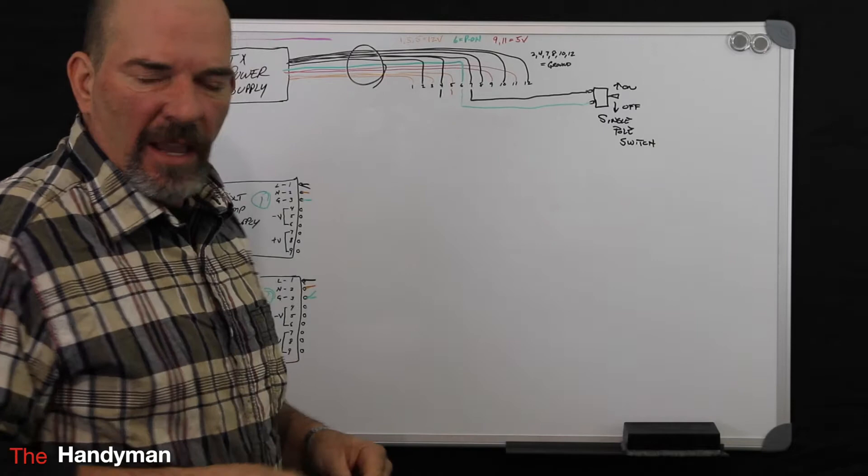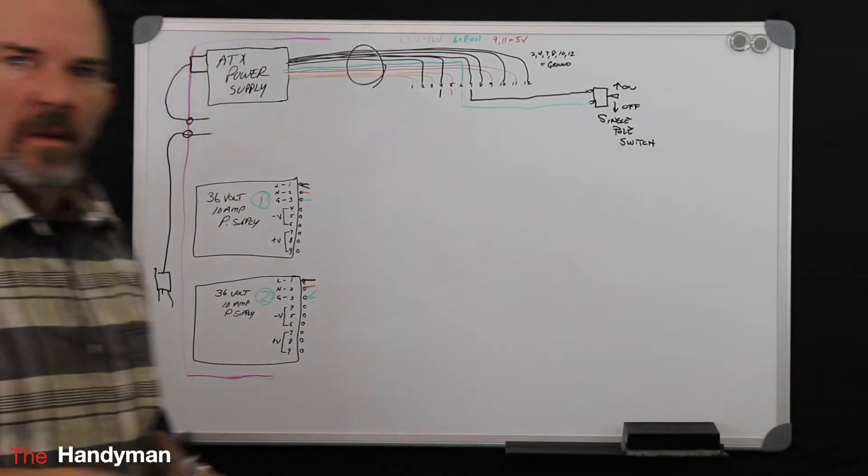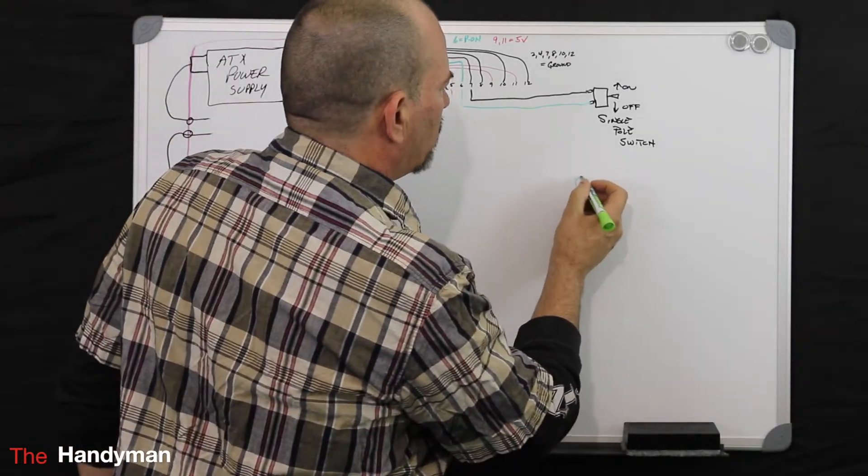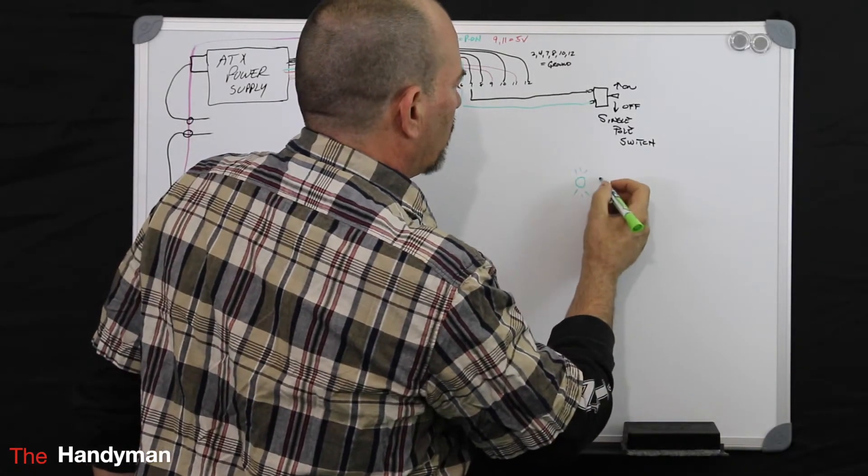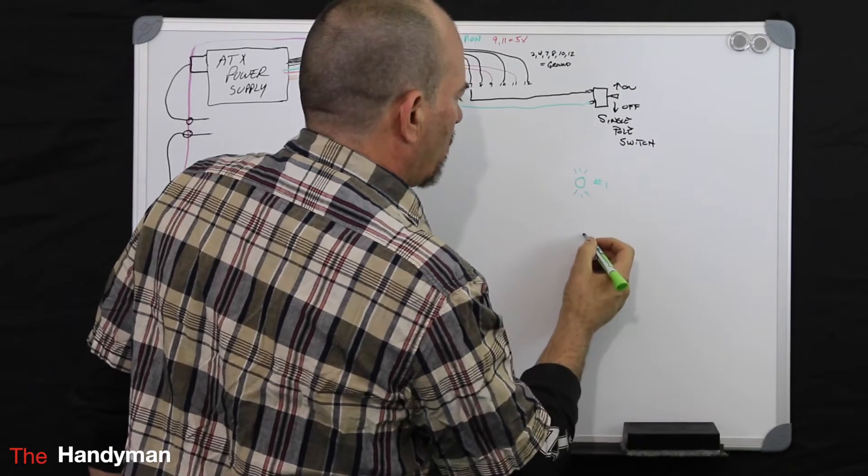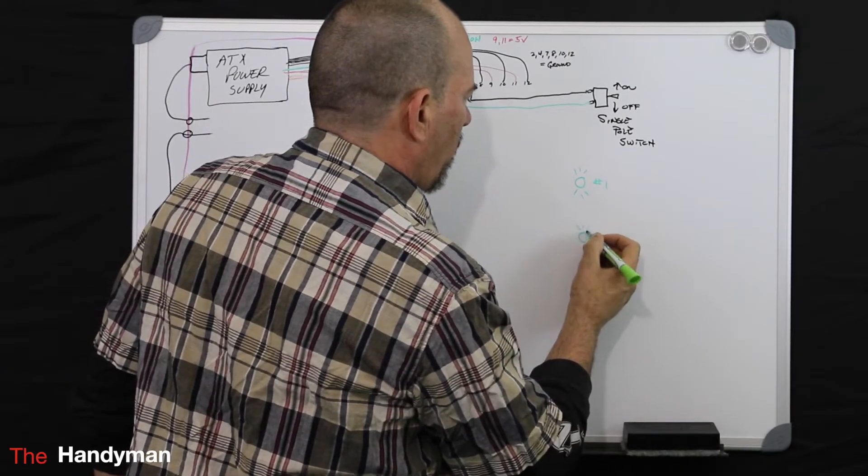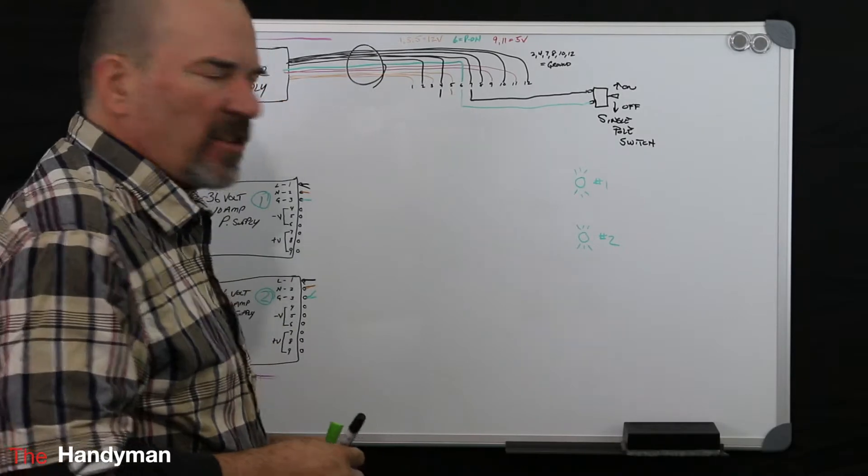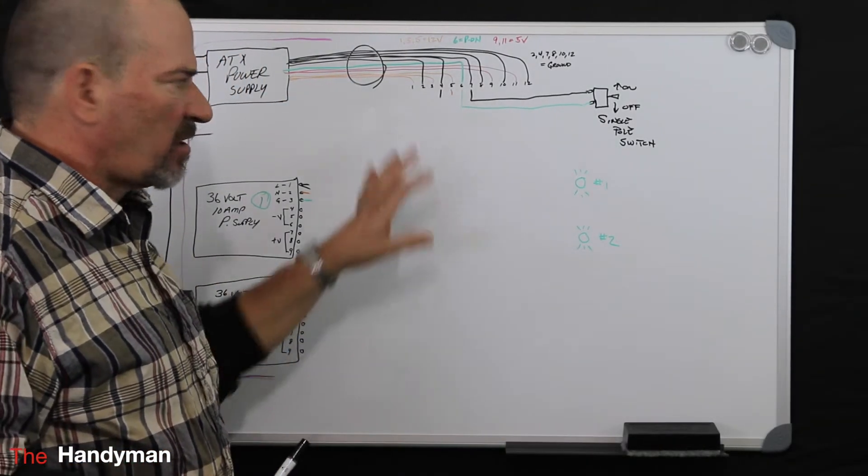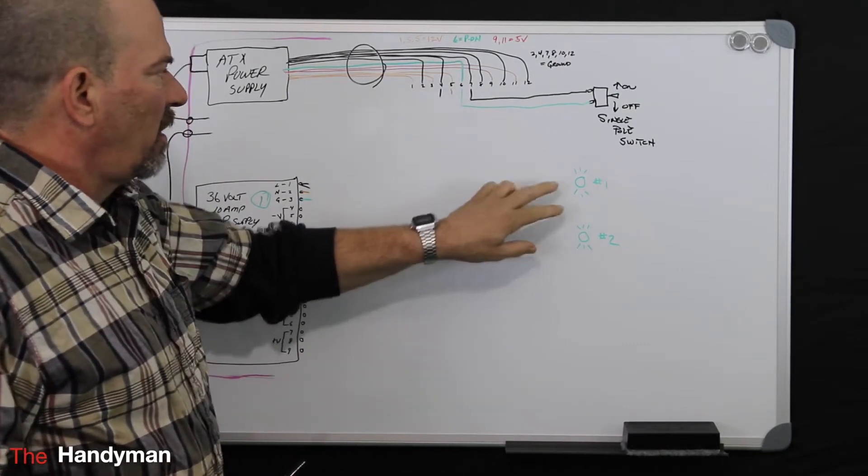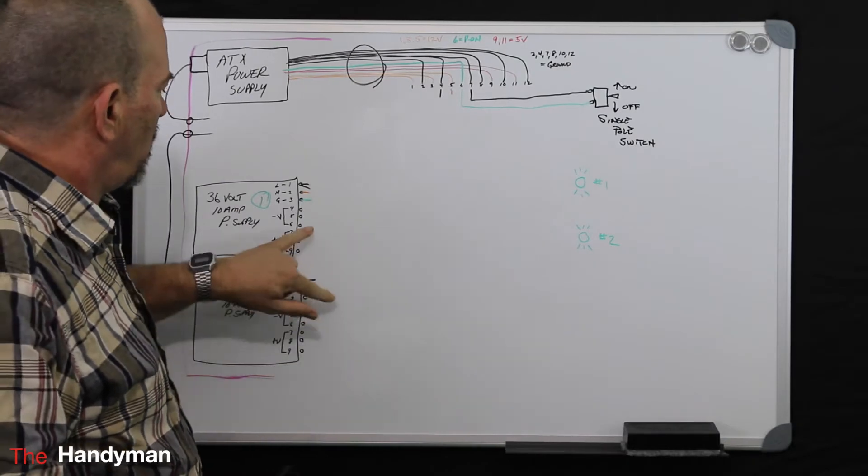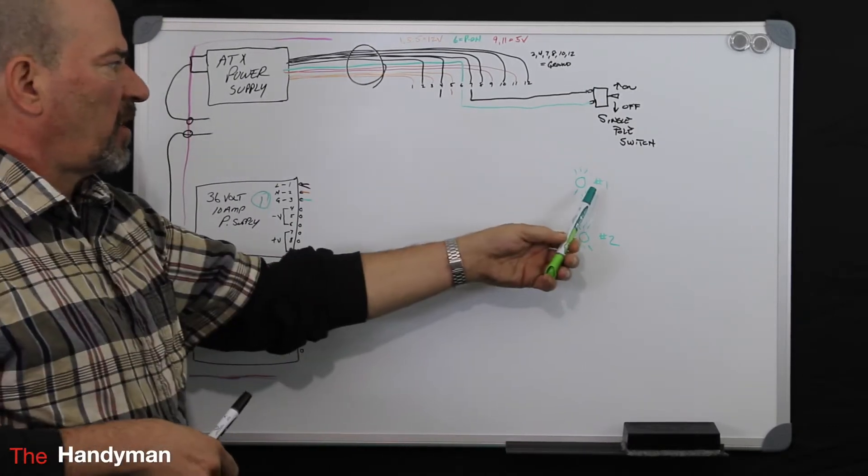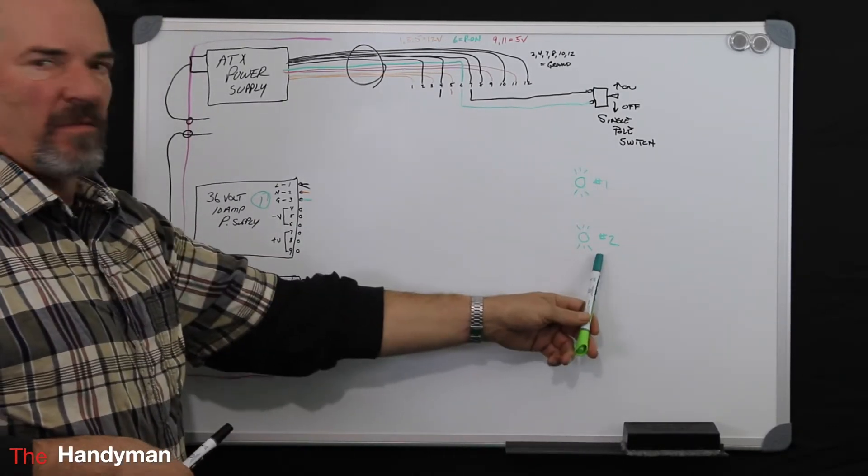So what I did here was I added two green pilot lights. We'll call this number one. This one number two. And the reason I added these pilot lights, I wanted to know when my system was on, was I getting 36 volt output from these two power supplies. This is power supply one, which represents one. Power supply two, and that represents number two.